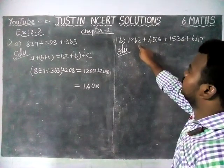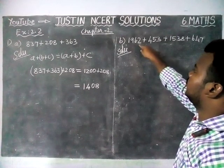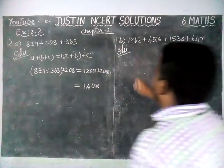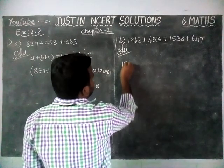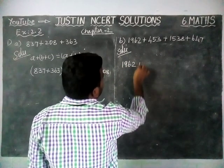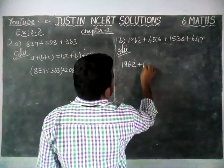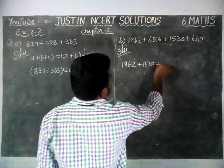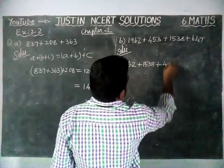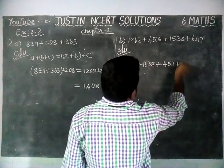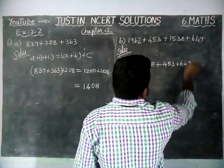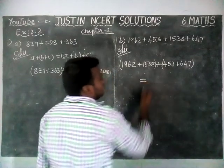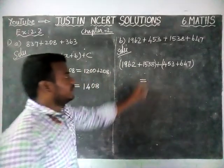The same thing applies here — 8 plus 2 gives a round number, multiple of 10. And 3 plus 7 also gives a multiple of 10. So we are going to rearrange: 1962 plus 1538 plus 453 plus 647.